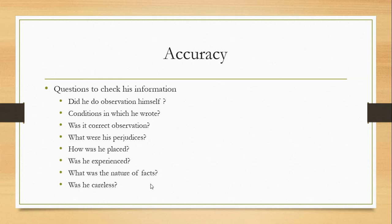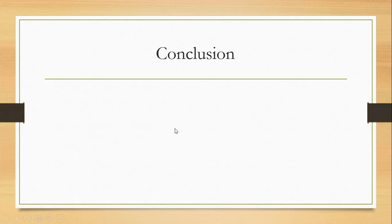The last question: was the author careless or lazy? For example, you go to report on a war but don't leave your hotel room — you just check what others say and what the newspapers say, and write from that. So the full set of accuracy questions is: did the author observe it himself, what were the conditions in which he wrote, was it a correct observation, did he have any prejudices, was he in the right place at the right moment, was he experienced or an amateur, what was the nature of the facts, and was he generally careless?